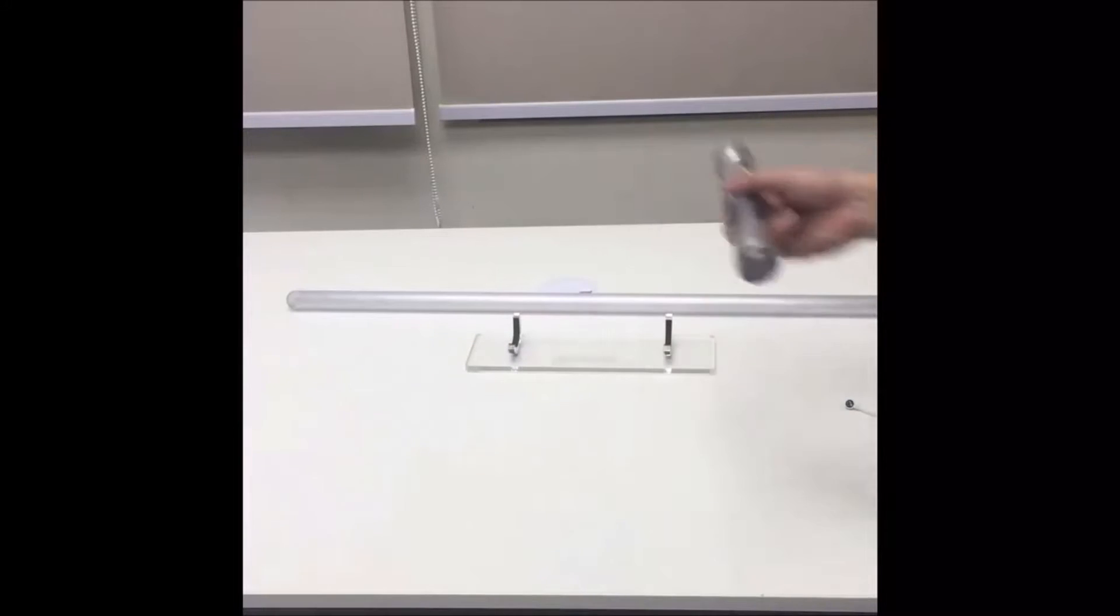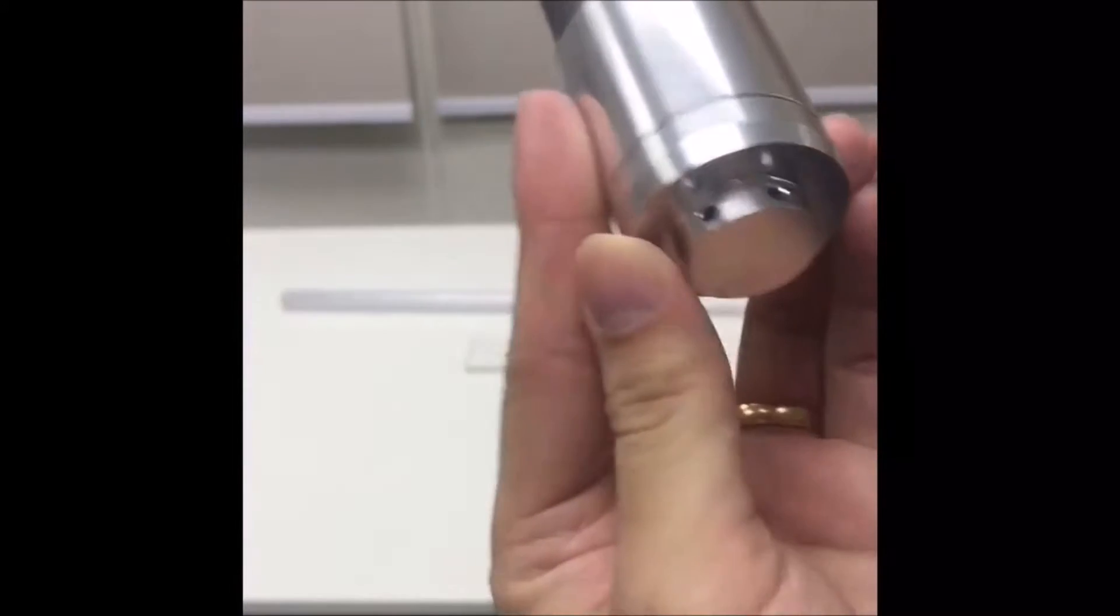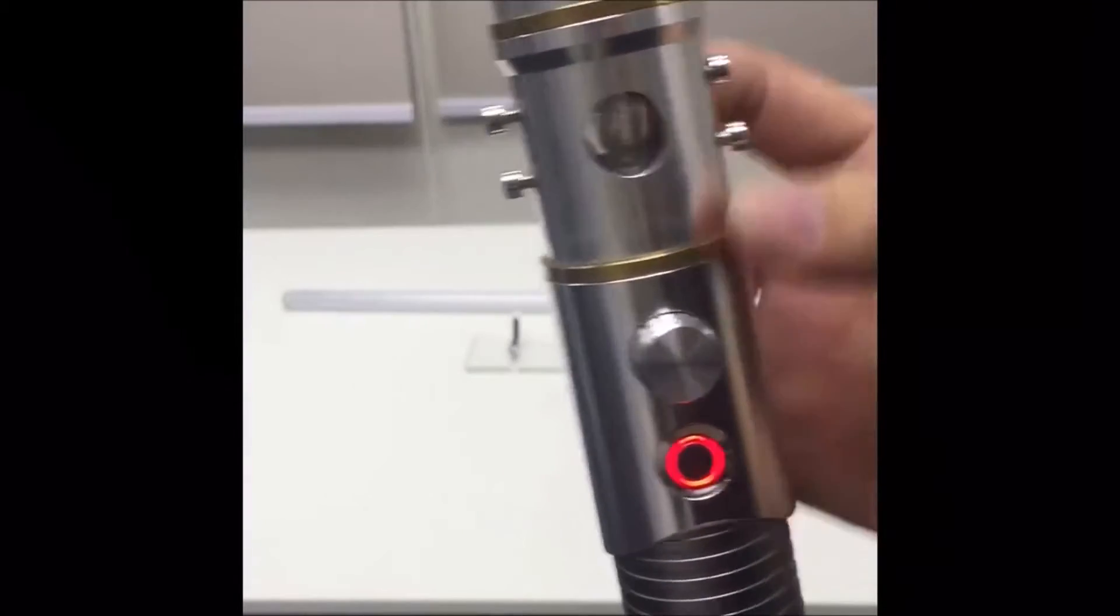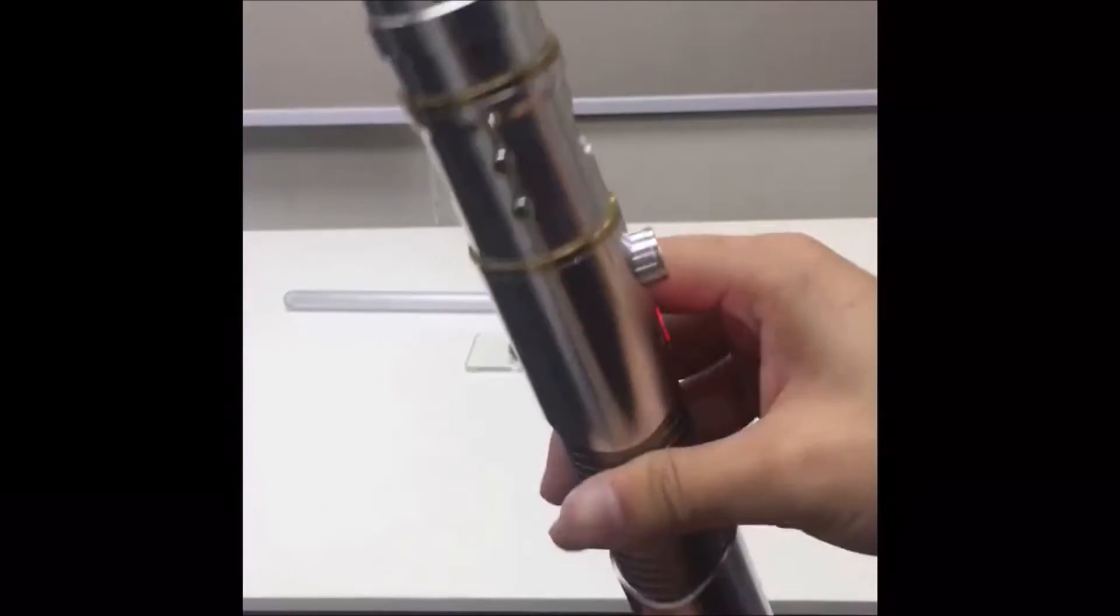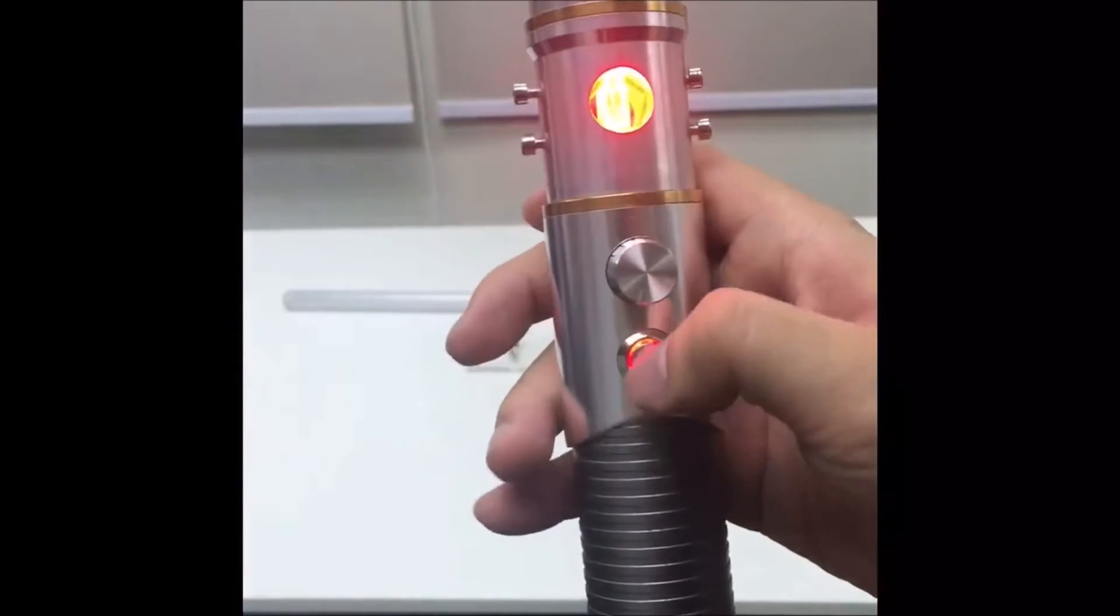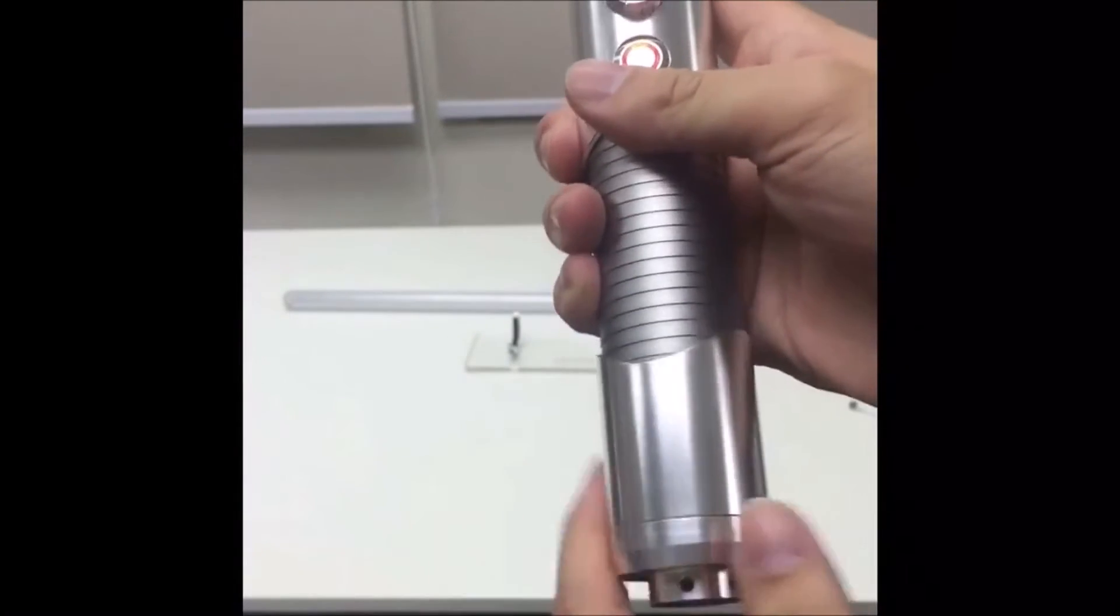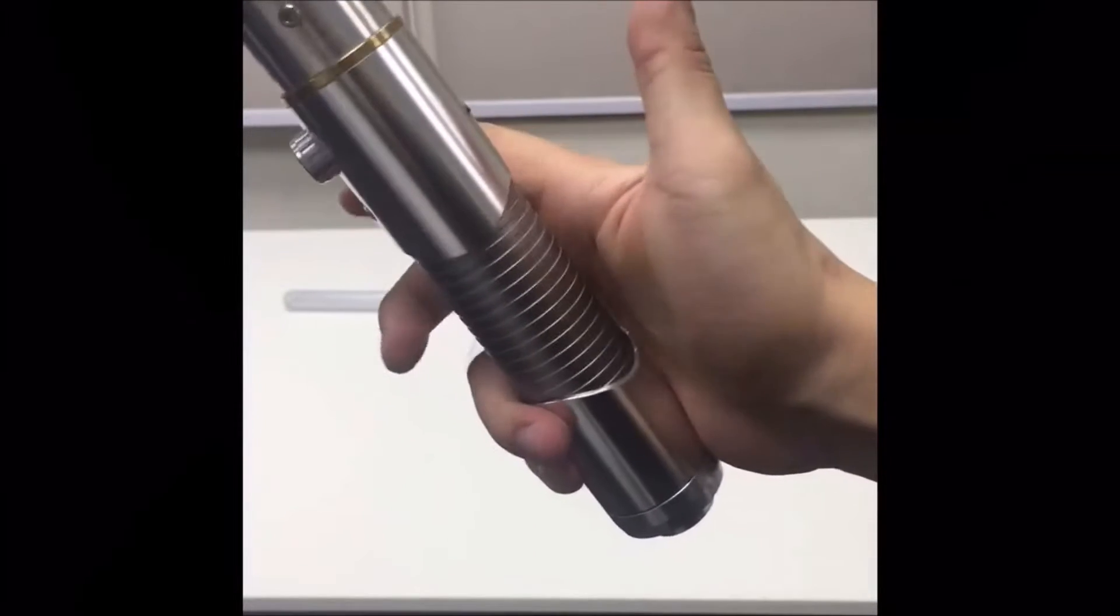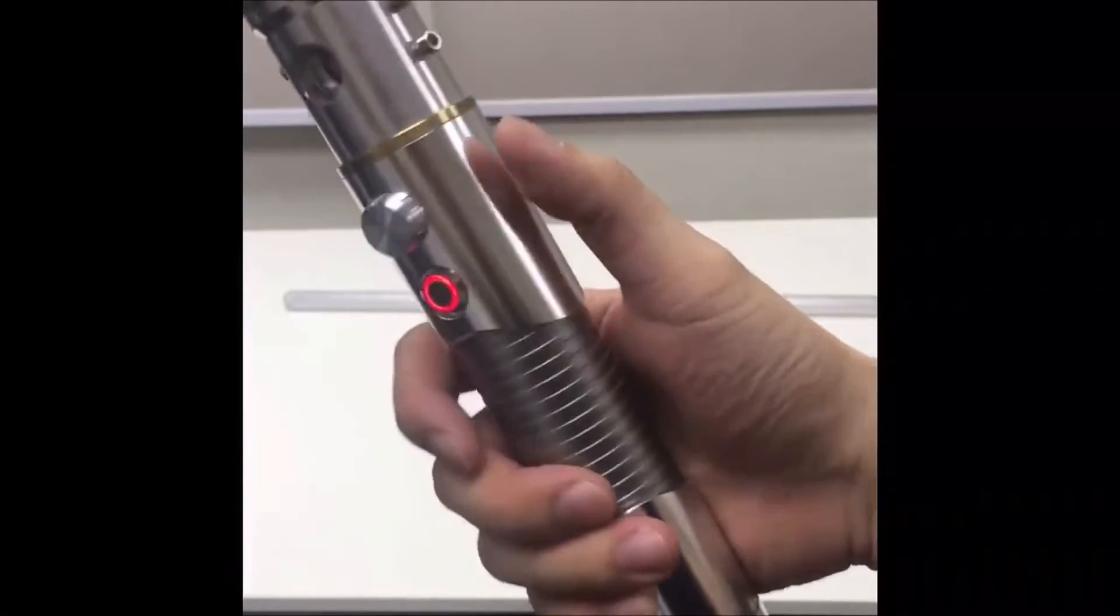Let's take a close-up look at this saber. Fully machined aluminum hilt, crystal chamber with lights and sound, blade plug that will fit a one-inch blade. Not to mention this really nice spinning function - when you do duels or spinning, this thing keeps your hand from burning. Cool, right? Really well thought out.